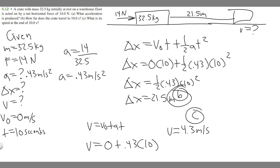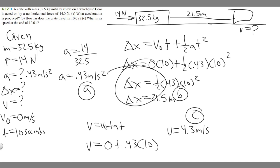So to summarize: B is 21.5 meters, C is 4.3 meters per second, and A — the acceleration — is 0.43 meters per second squared. Those are your answers and how you solve this problem. Hopefully you found this useful.